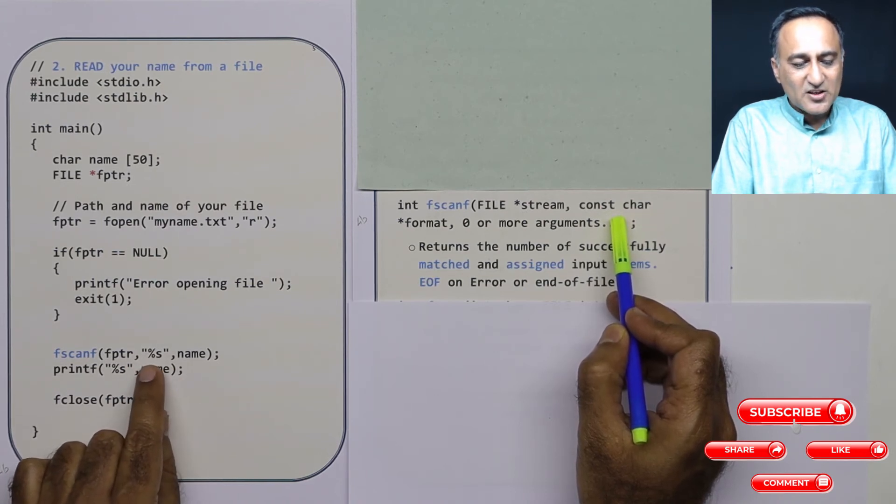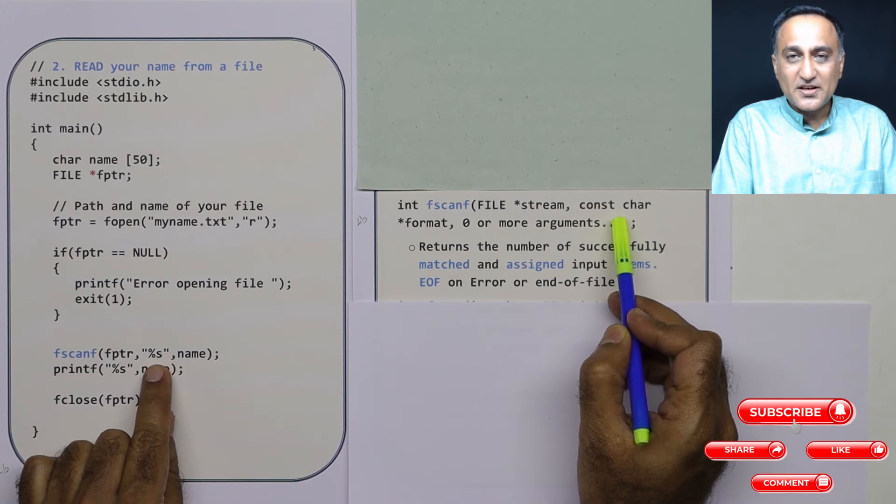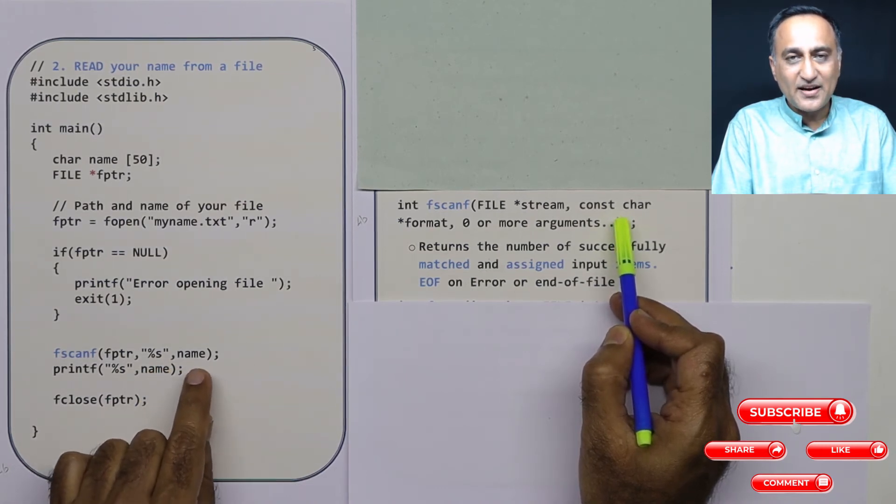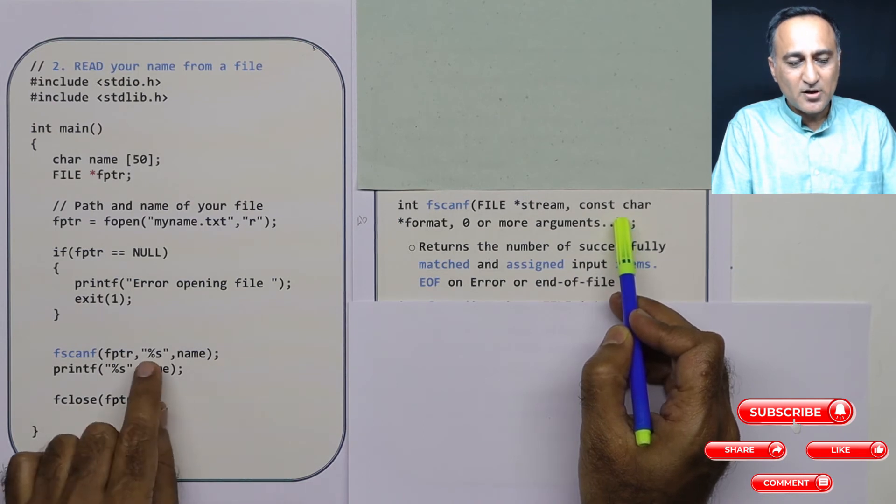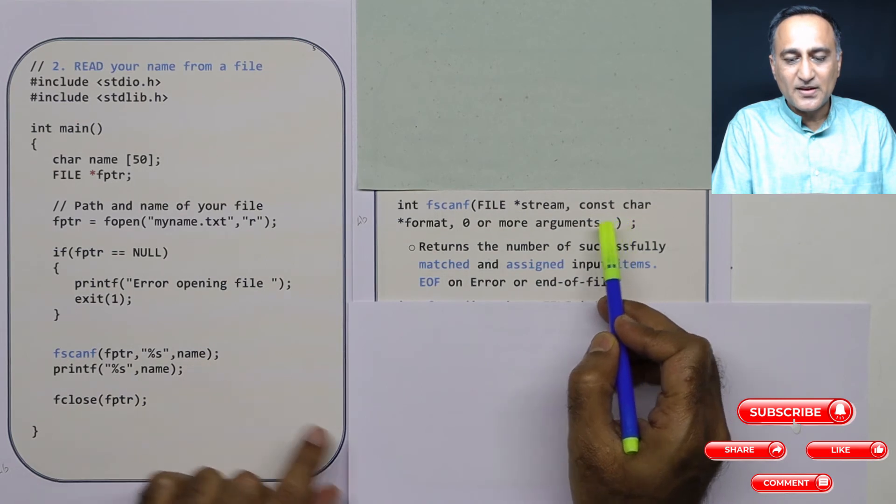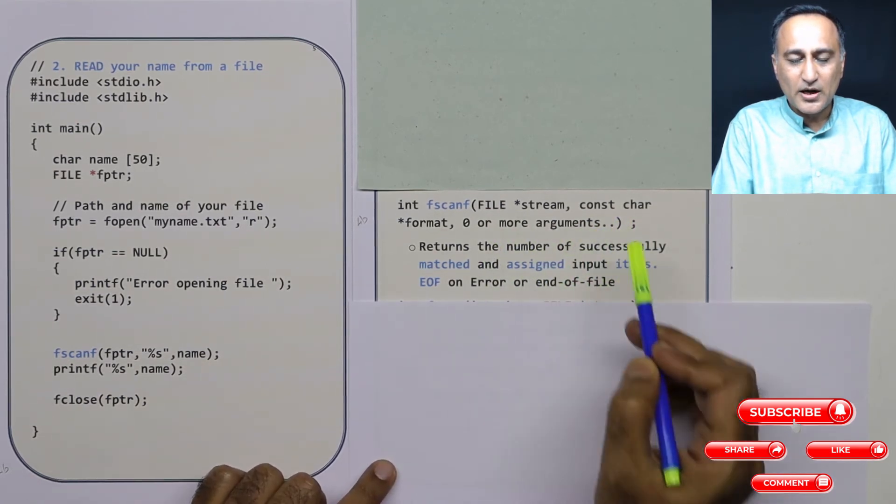And then instead of reading just one %s, instead of doing one name, I can have multiple %s and I can read name1, name2, name3. So you can have multiple parameters here, you can have multiple arguments here. That's why I'm saying zero or more arguments.